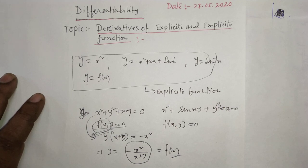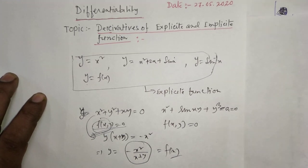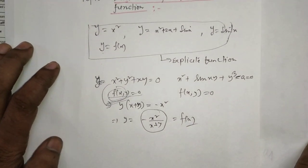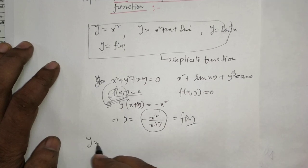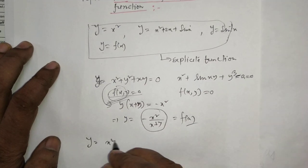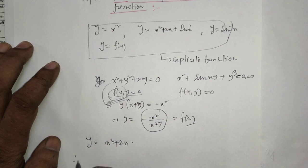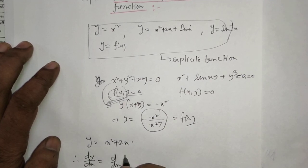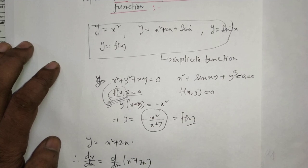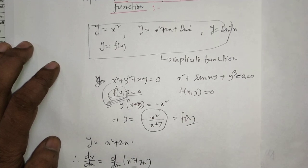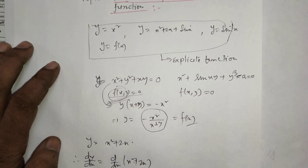To find the derivative of an explicit function is very easy. For example, suppose y equals x squared plus 2x. To find dy/dx, take d/dx on both sides: d/dx of x squared is 2x, and 2 is a constant so we get 2 times d/dx of x. Since d/dx of x equals 1, the result is 2x plus 2.